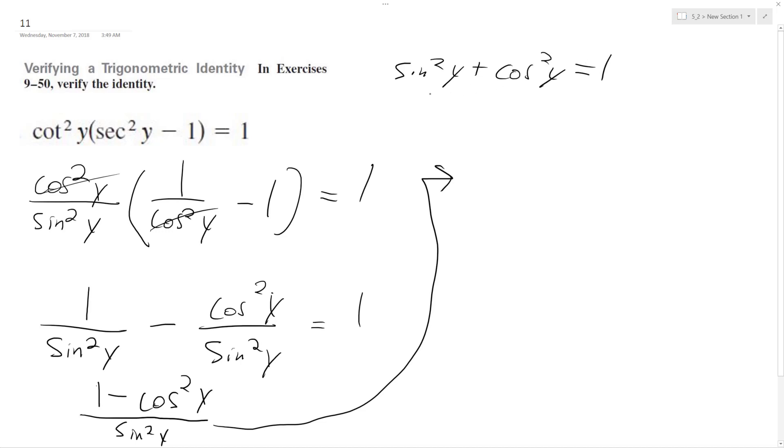And if you have sine squared y, it's the same thing if I subtract cosine, so I have 1 minus cosine squared y. So I can convert this top into sine squared y, and then on the bottom I have sine squared y, and these cancel out, and that's how I get 1. And so we have 1 is equal to 1, which verifies our identity.